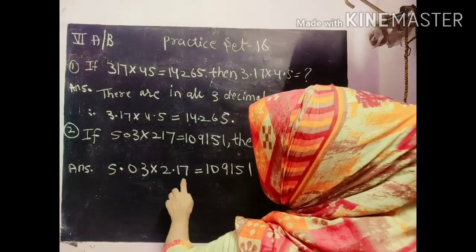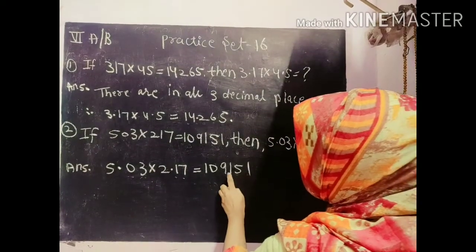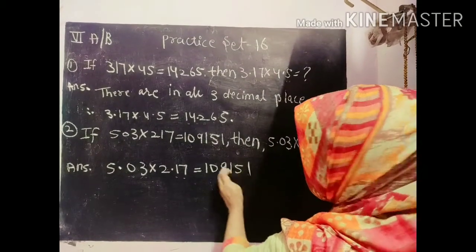Here we will write 5.03 into 2.17 is equal to, the answer will be count same here 10915 and 1. Again we will count 1, 2, 3 and 4. So here 1, 2, 3, 4.